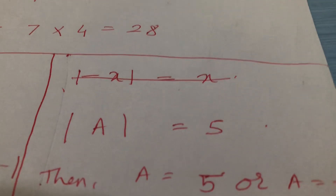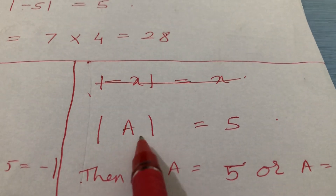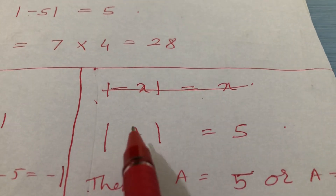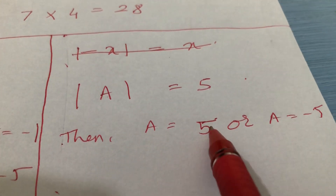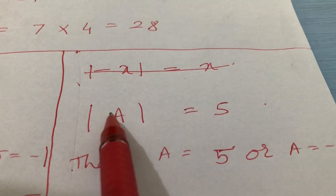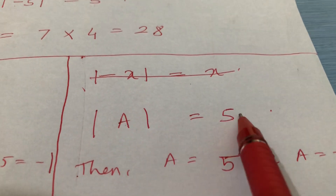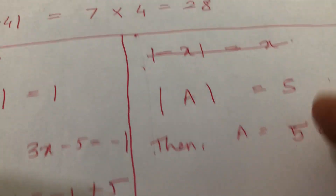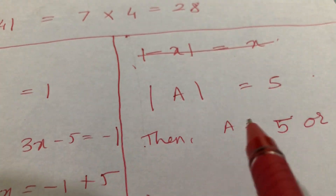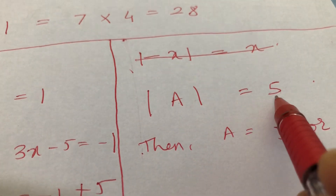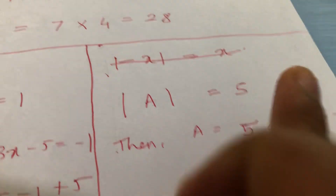Now suppose mod of a is 5 — what can the values of a be? A can be either 5 or minus 5, because mod of 5 is 5 and mod of minus 5 is also 5. So when the mod sign goes away, we get plus or minus.